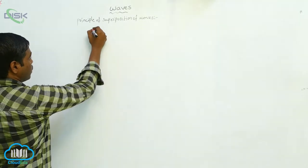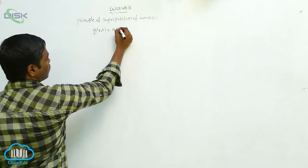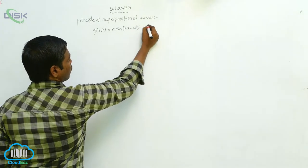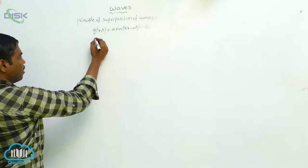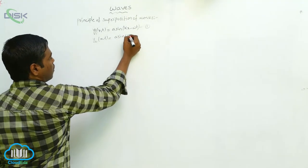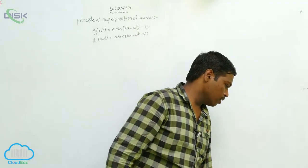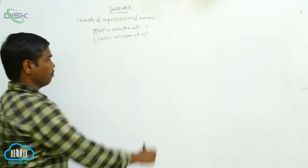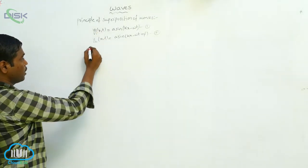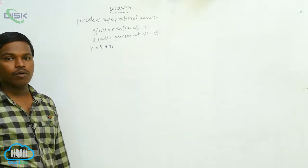I am taking a wave y1(x,t) = A sin(kx − ωt) as equation one, and a second wave y2(x,t) = A sin(kx − ωt + φ). These are the two waves traveling in a medium. When they superimpose on each other, the resultant displacement y is equal to the algebraic sum y1 plus y2.